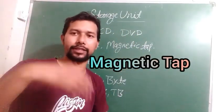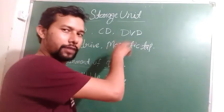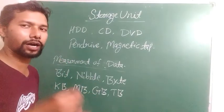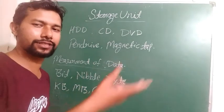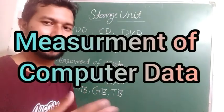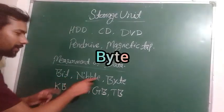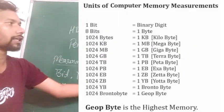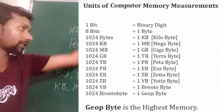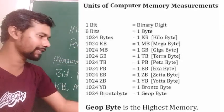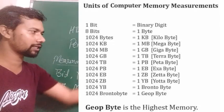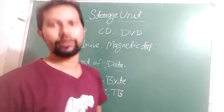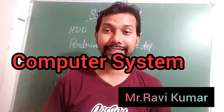In the next video, I will explain all storage devices in detail. When you store data, it is measured in computer units. Just as in mass we use liter, meter, and milliliter, in computers we use bit, nibble, bytes, kilobytes, megabytes, GB, and TB. A bit is binary, nibble comes next, and the largest units are GB and TB. This table shows the data measurement units used in computers. I hope you understand computer system. Thank you for watching.